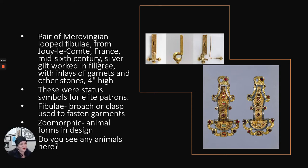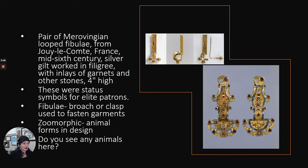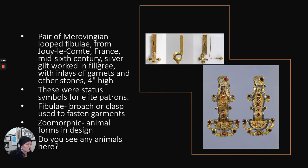This is a pair of Merovingian looped fibulae found in France from the mid-6th century. They have silver, gilt, and filigree with inlays of garnets and other stones — definitely status symbols to have something this jewel-encrusted, so this would have been for an elite patron. Zoomorphic animal forms and design become popular in this culture. If you look at the very top, we have an eagle head on each of them with the garnet being the eye. Coming down the fibulae there's a fish, and we have some more bird heads around the bottom kind of interlinking.